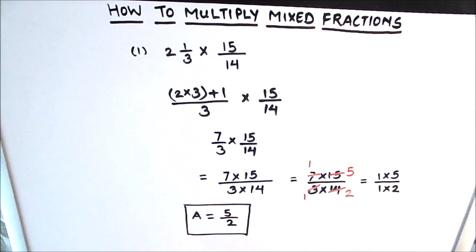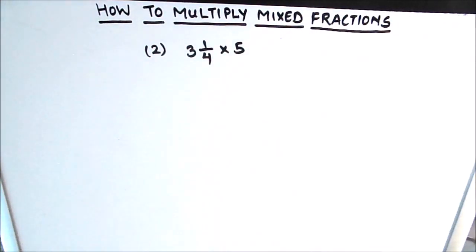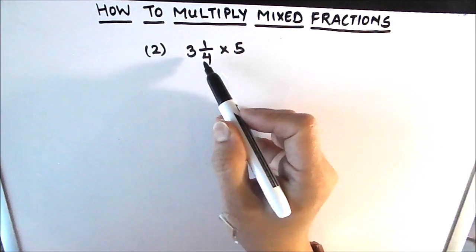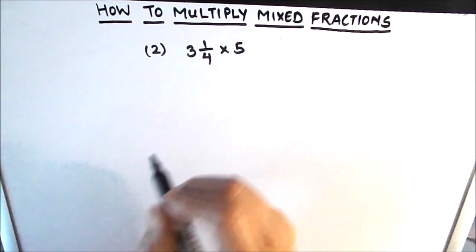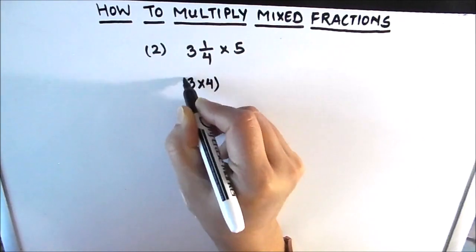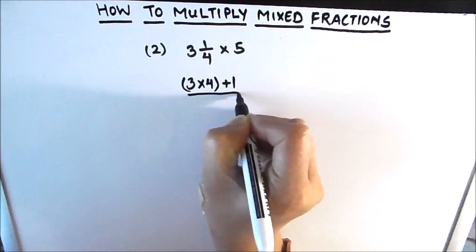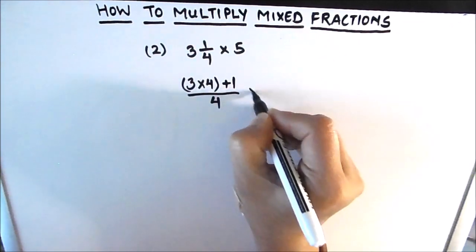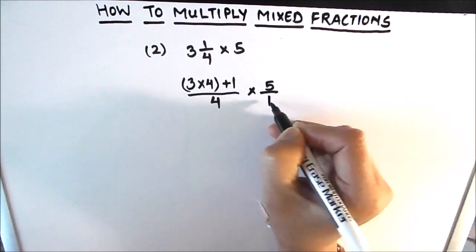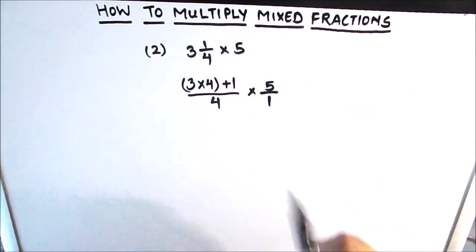This is how we multiply and simplify mixed fractions. Let's move on to our second example. In our second example we have a mixed fraction 3 and 1 by 4, times the whole number 5. Here too we are going to start by converting this mixed number into an improper fraction. That's going to be 3 times 4 plus 1 divided by 4.